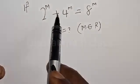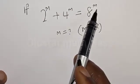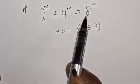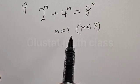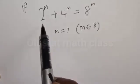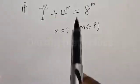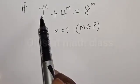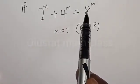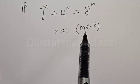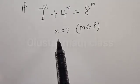If 2 raised to power m plus 4 raised to power m is equal to 8 raised to power m, what is the value of m? Hi everyone, welcome to my class. In today's class we want to find the value of m from this given exponential equation, where m is a real number.